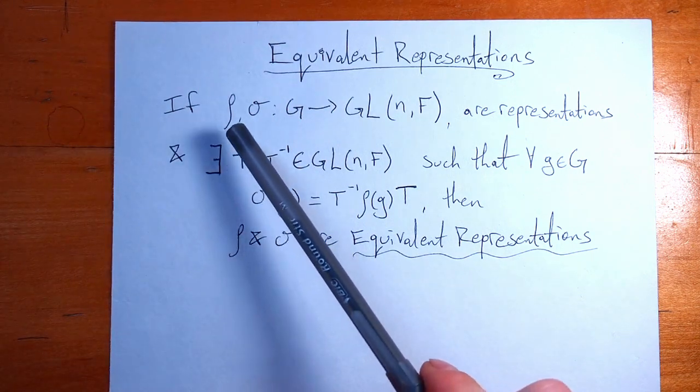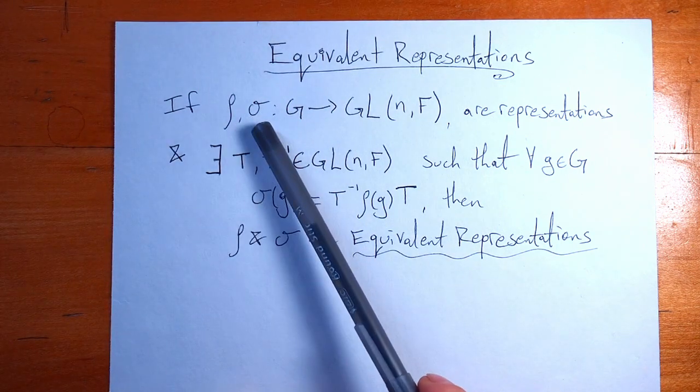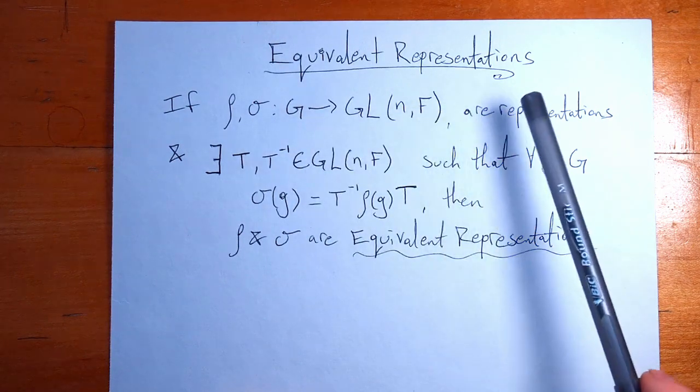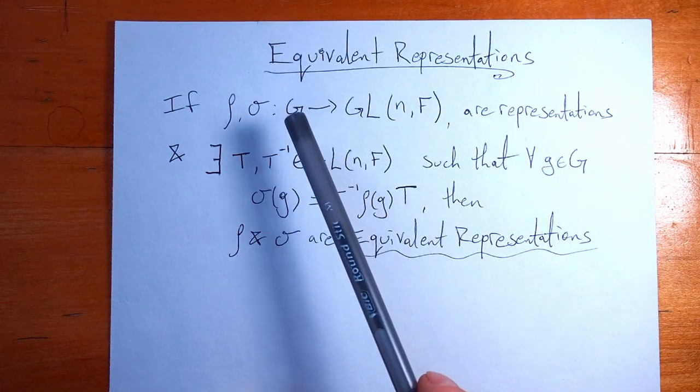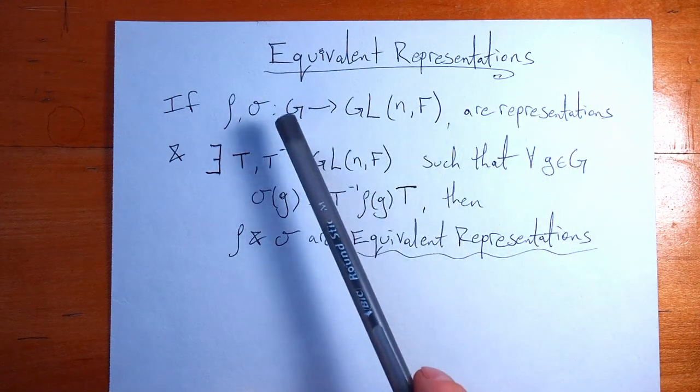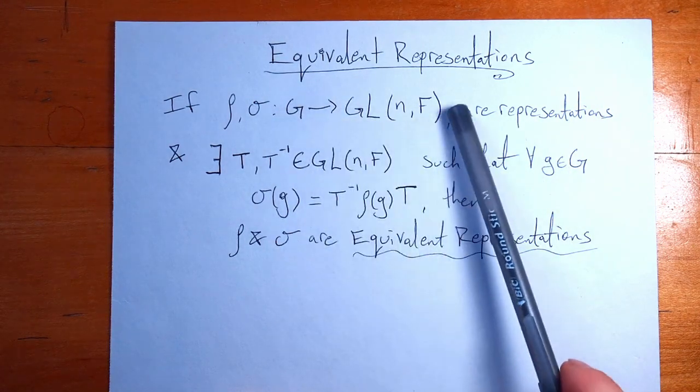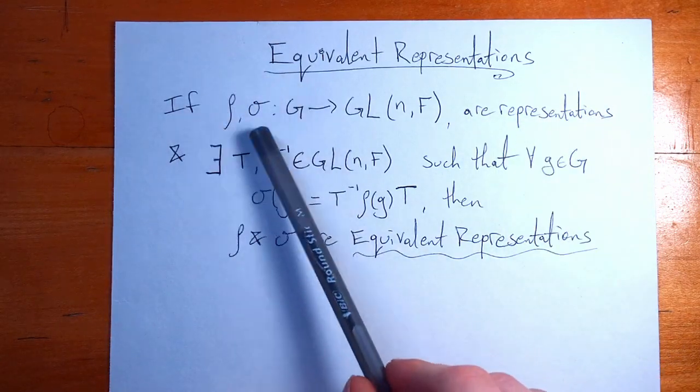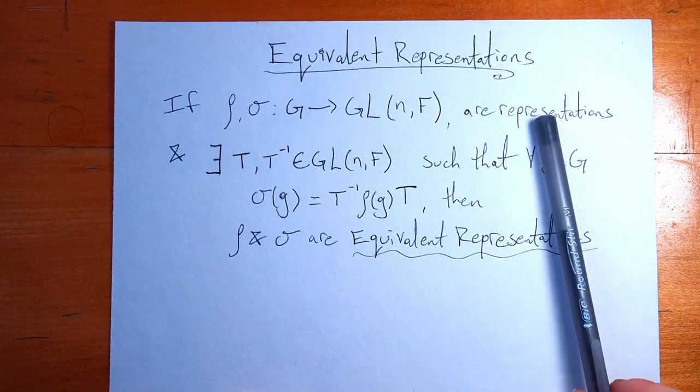If you have two maps, rho and sigma, that map from G to GL(n,F), and they're representations. So we have half of what we need for them to be a representation. They map from a group to the group of matrices, but they also have to be a homomorphism. These two guys satisfy both properties and are representations.